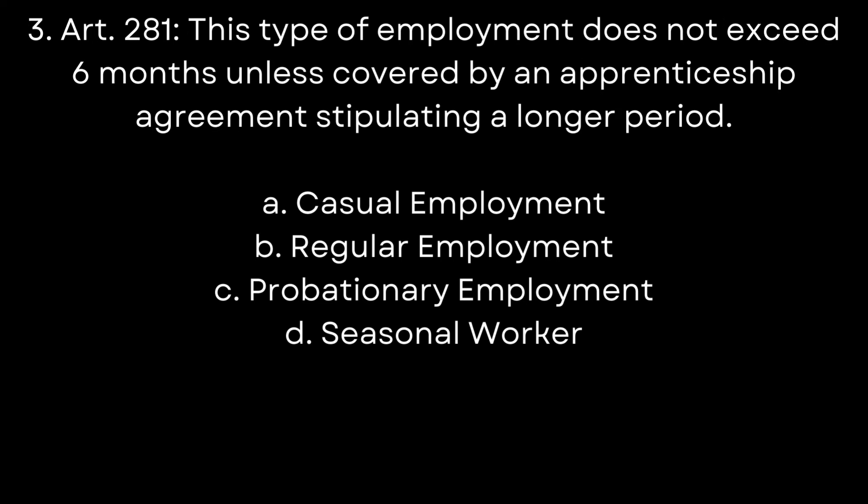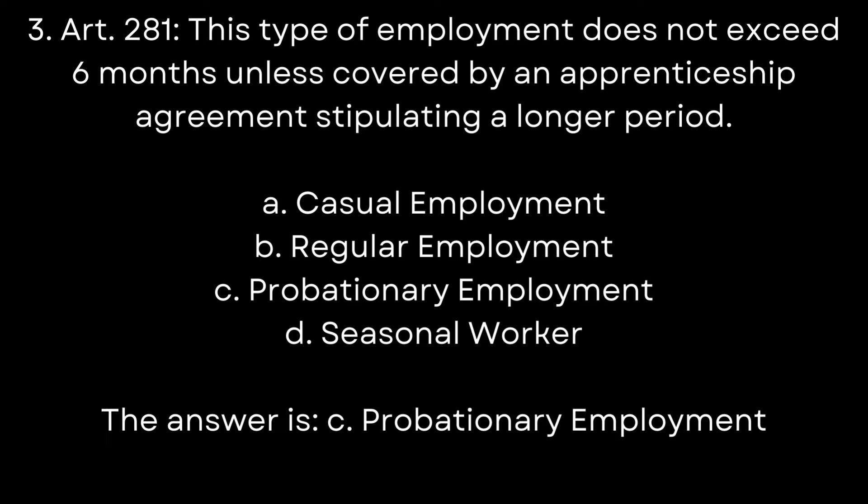Question 3. Article 281. This type of employment does not exceed 6 months unless covered by an apprenticeship agreement stipulating a longer period. A. Casual employment. B. Regular employment. C. Probationary employment. D. Seasonal worker. The answer is C. Probationary employment.